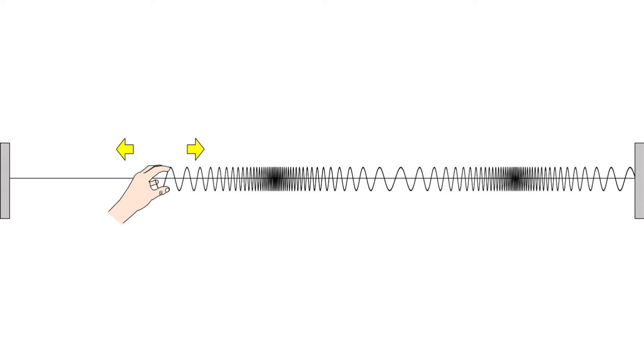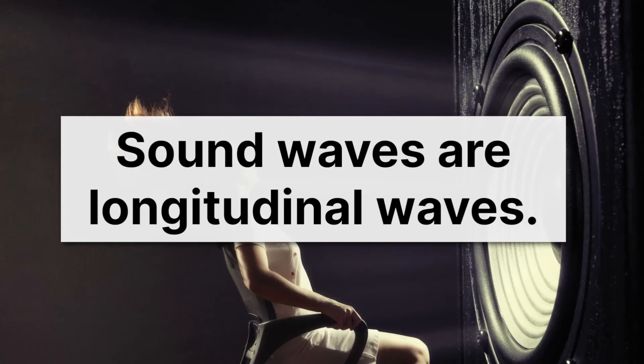This is just like our slinky that we saw a few lessons back. If we move our hand back and forth, we'll create a series of compressions, and a series of expansions or rarefactions. Now here's the thing, what sort of wave is this? Well this is a longitudinal wave, and that's what sound waves are. Sound waves are longitudinal waves.